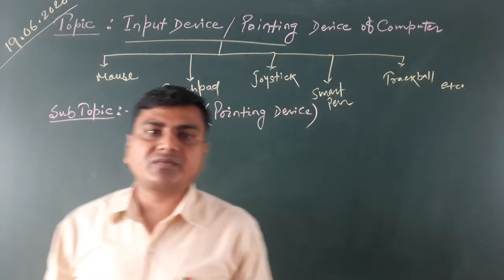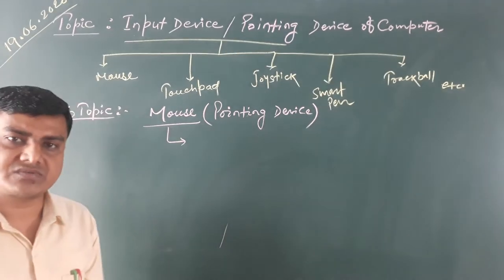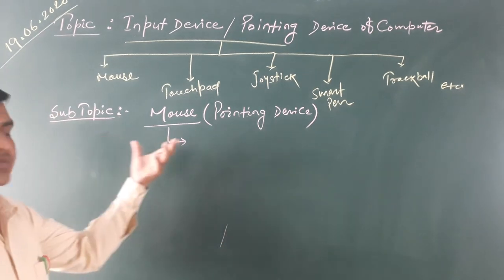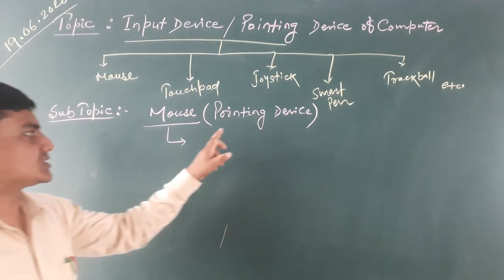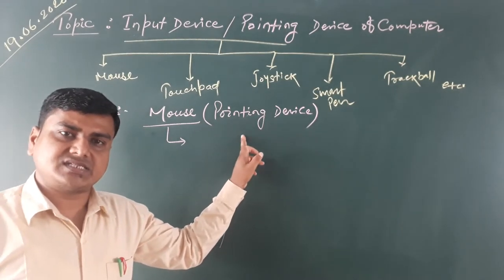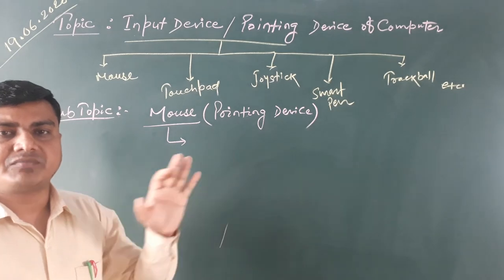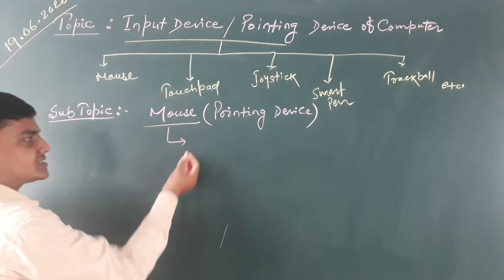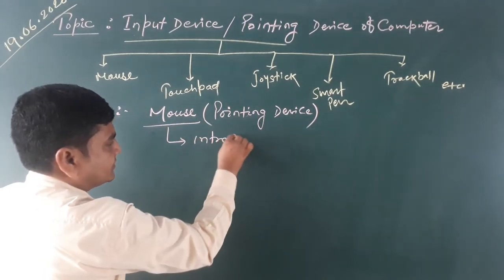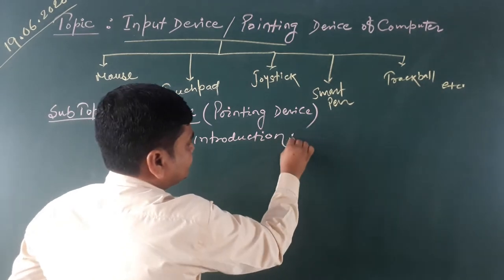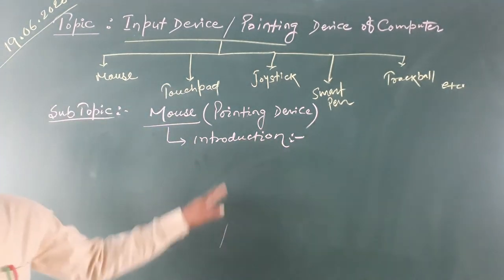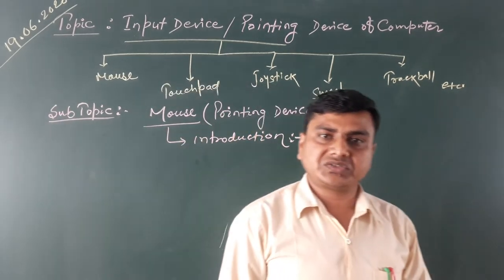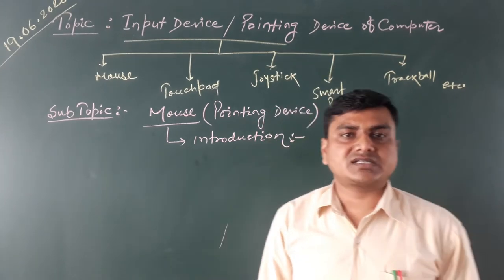These are the popular pointing devices of the computer used for various functions and purposes. Today we will start by discussing the mouse. The mouse is a pointing device used to control cursor position over the computer screen. In its introduction, the mouse is an input device used to give instructions and commands to the computer.